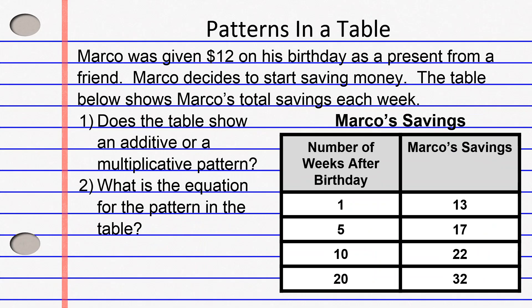Does this table show an additive or multiplicative pattern, and what is the equation? Let's start with one week after Marco's birthday. What do we have to do to 1 to get to 13? To get from 1 to 13, we could add 12. Let's try the additive pattern first: 1 plus 12 equals 13. If it's an additive pattern, we must add the exact same number again. So we need to add 12 to 5 as well. 5 plus 12 — does that equal 17? It sure does. Looks like an additive pattern so far, but we must check all numbers.